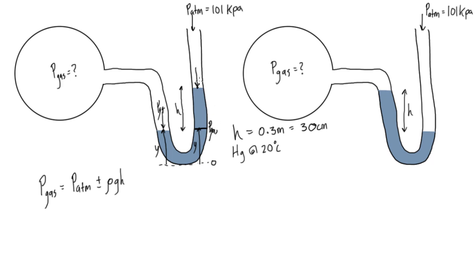On the open side, P_atm is pushing down. We can focus on this column: atmospheric pressure is pushing down on a column of liquid above the reference level where P_gas acts. As you go deeper in a fluid, pressure always increases, so P_gas must be greater than P_atmosphere. We can also think of it this way: a greater pressure on the gas side forces the open side up. So we use the plus sign — P_gas = P_atm + ρgh.